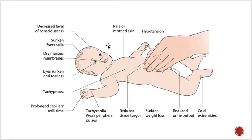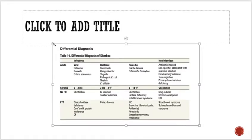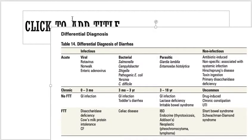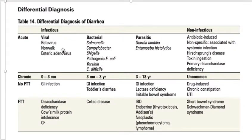Many babies can die because of gastroenteritis — for example, rotavirus is the most common viral cause. Before going to investigations, let me explain the causes of diarrhea. They can be categorized as acute or chronic. Acute causes are divided into infectious and non-infectious, while chronic causes are divided based on whether there is failure to thrive or not, and by age group.